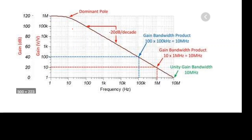This graph shows how the gain decreases with frequency. On the x-axis we have frequency ranging from 1 Hz to 10 MHz; on the y-axis we have gain in both linear and dB scale. To convert linear to dB we use the formula 20 log(Vout/Vin). When gain is 1 that is 0 dB; when gain is 10 that is 20 dB; when gain is 100 that is 40 dB.